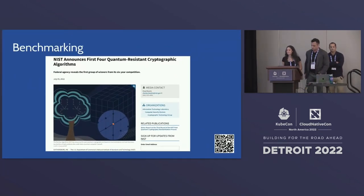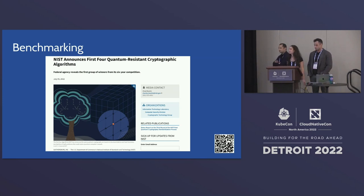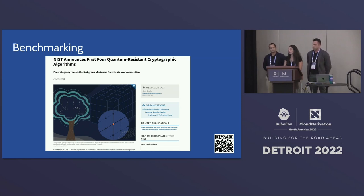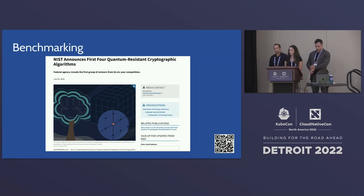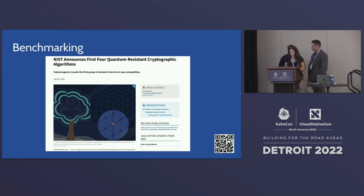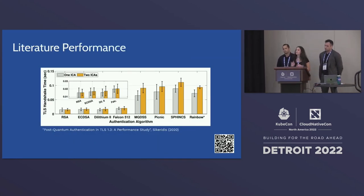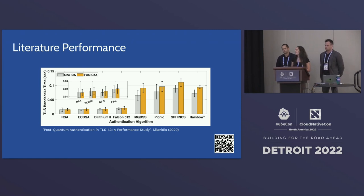Now that we have a quantum-resistant version of NGINX, we want to make sure its performance is comparable to NGINX with standard encryption algorithms. We've done extensive benchmarking — instructions to replicate this are available via QR code to our GitHub repository. In July 2022, NIST announced the four winning algorithms from their six-year effort, including Dilithium, Falcon, and Sphincs for digital signatures. We chose to use Dilithium as it is the fastest of the post-quantum options based on literature performance. I will demo our benchmarking for NGINX using Dilithium compared to standard RSA.